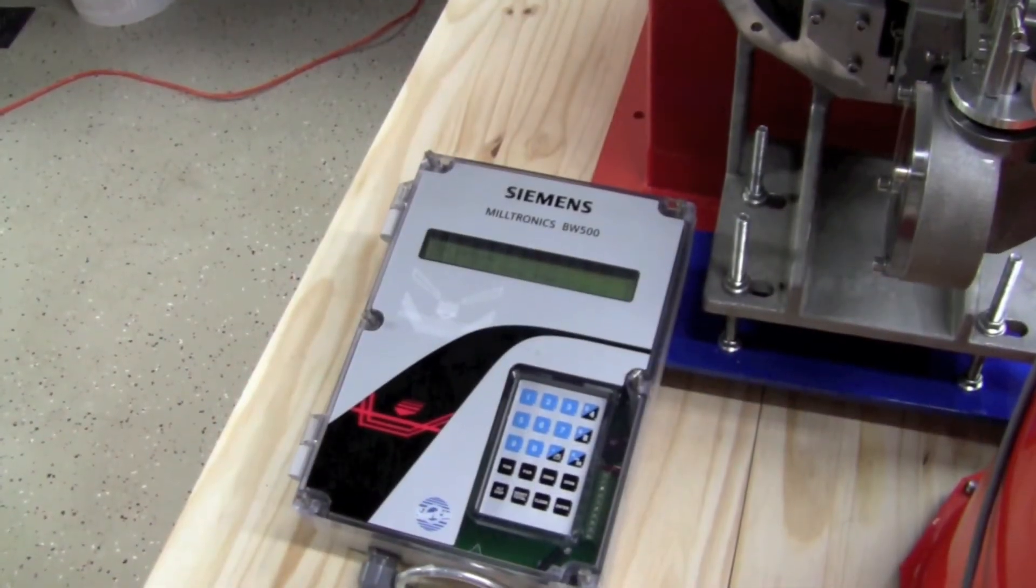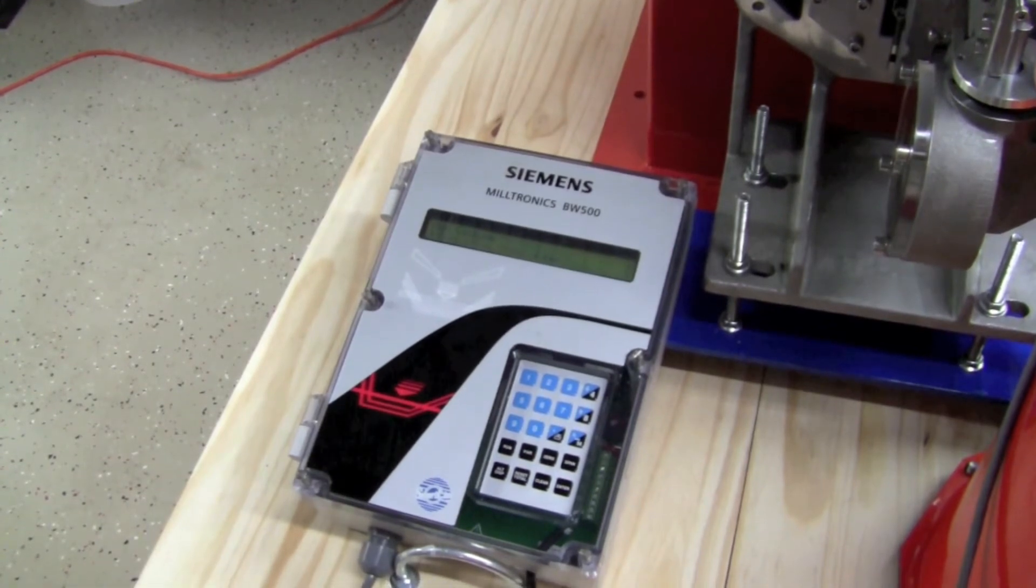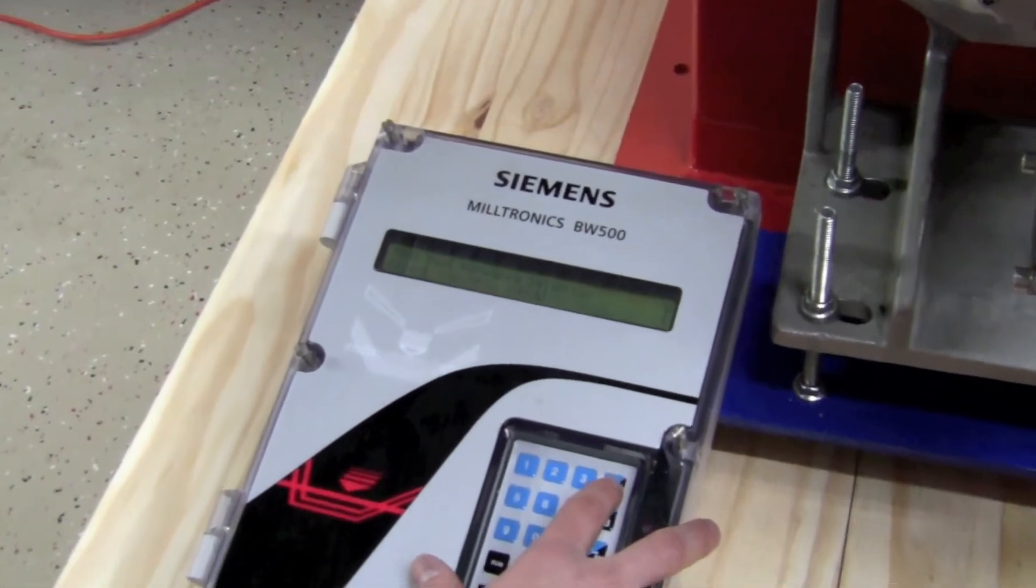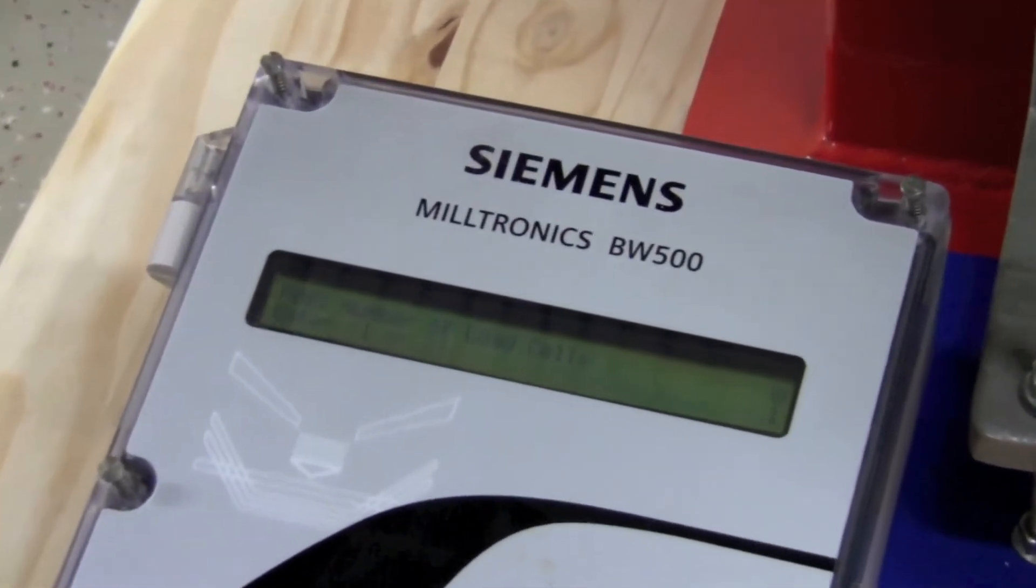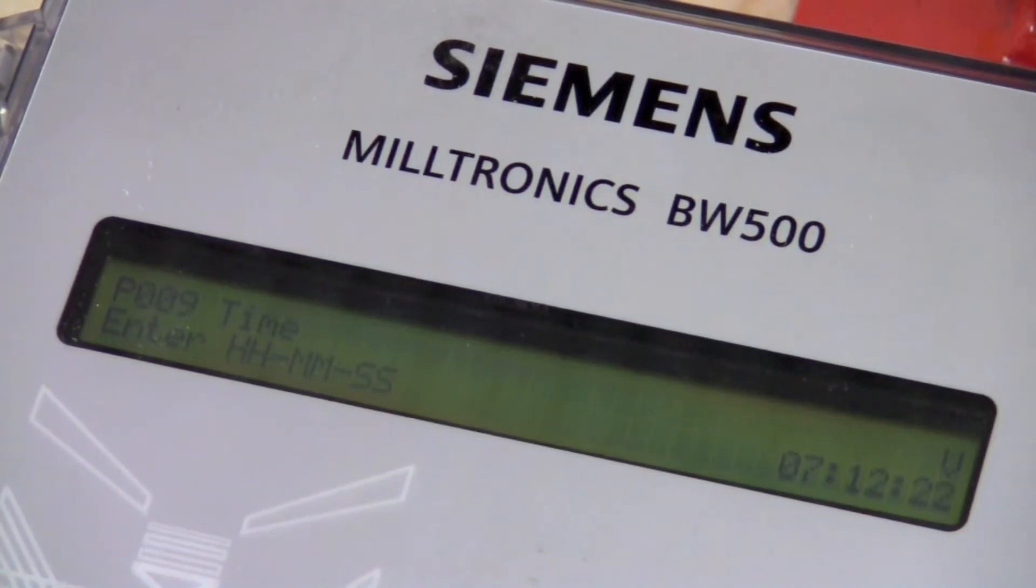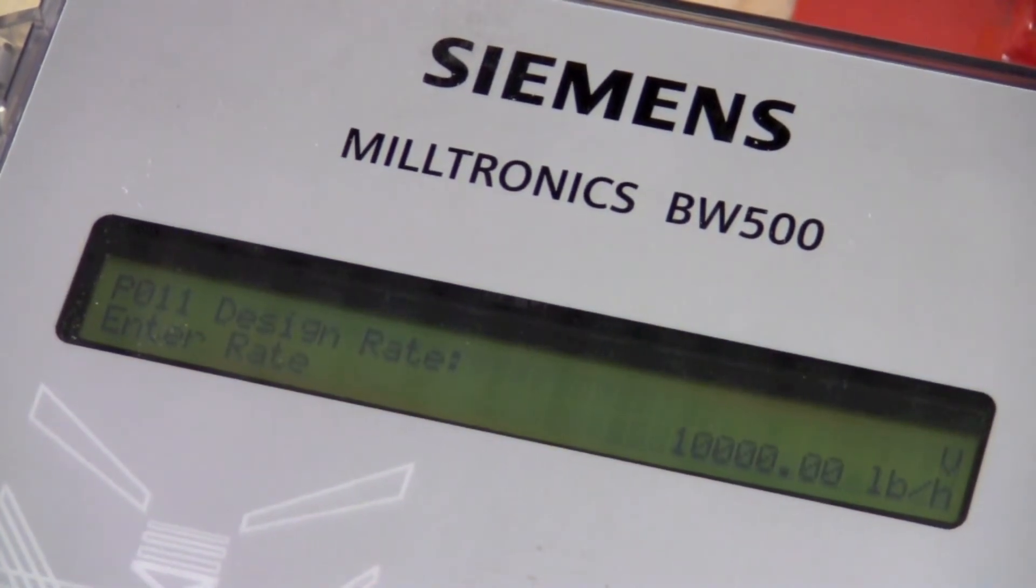Once you have all your hardware set up, you'll then need to go to the integrator and perform an initial setup. The first few parameters are just your basic language, date, time, units. Once you come to parameter 11 is where things start to get important.